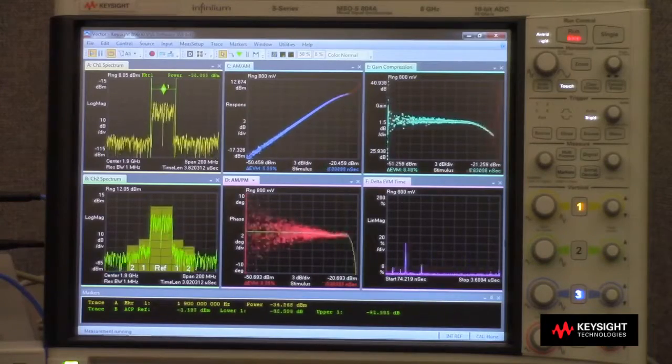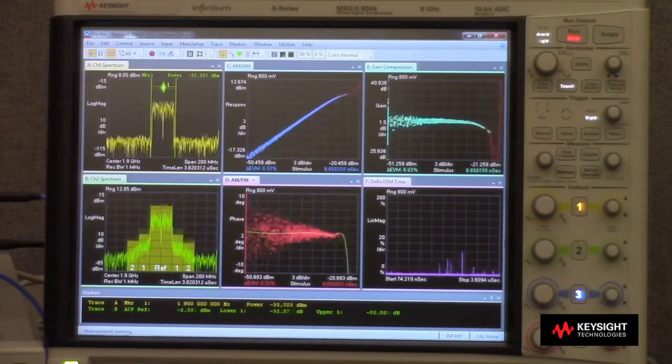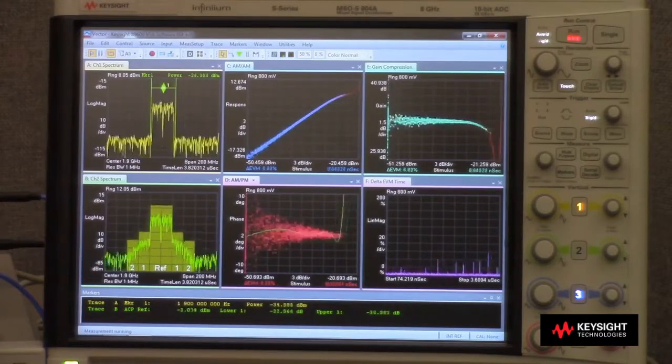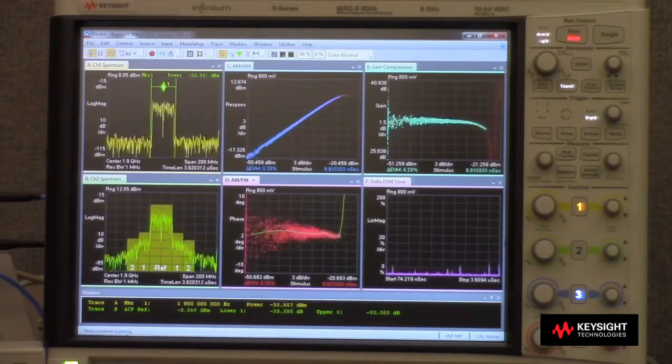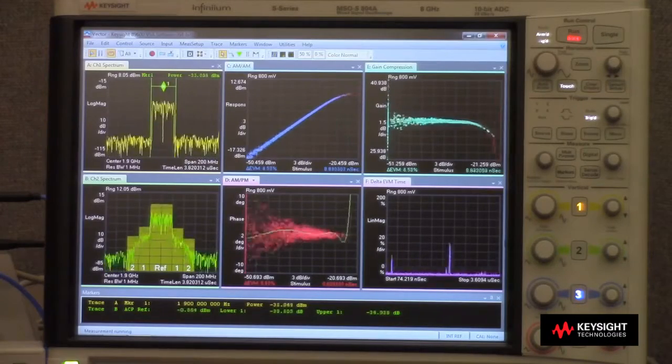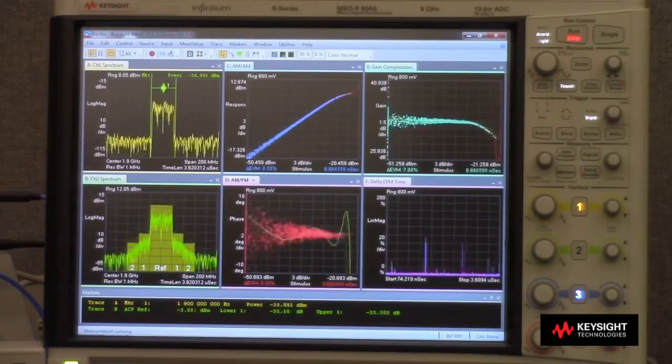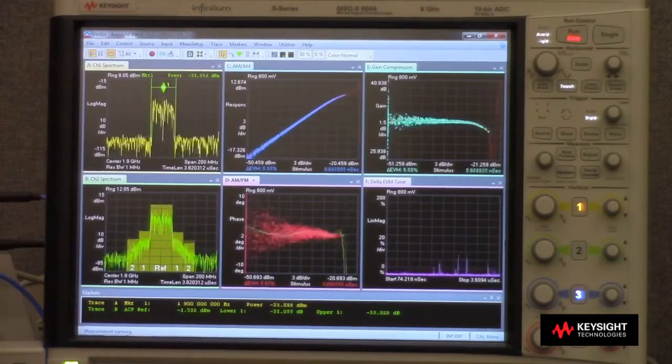In the center top we can see our AM to AM compression. In the center bottom we can see AM to PM distortion. And then lastly in the upper right hand corner we can see our gain compression figures of merit. And we can see those graphs rolling off slightly indicating compression of the amplifier.